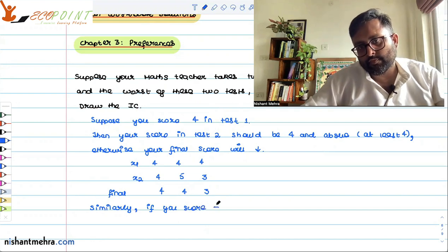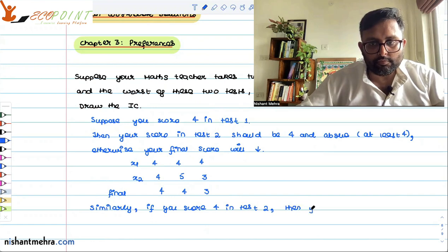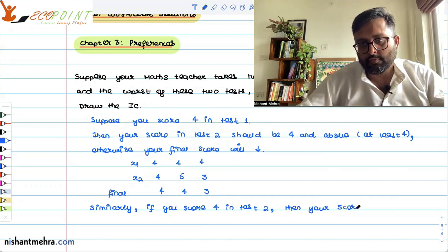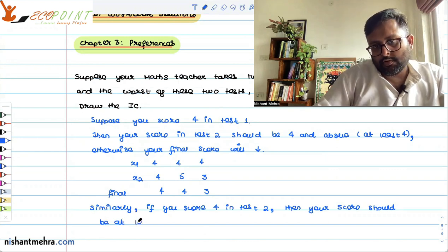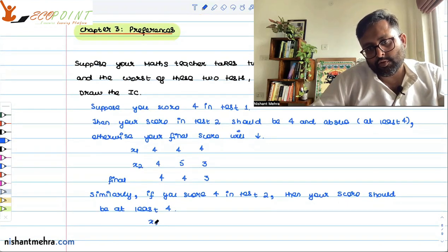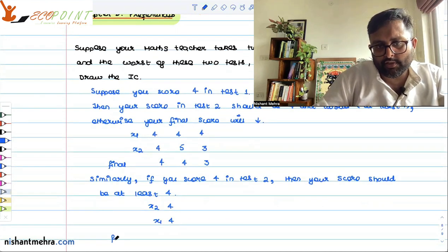Similarly, if you score 4 in test 2, then your score in test 1 should be at least 4. If x2 is 4 and x1 is also 4, it doesn't matter — the final score is 4.